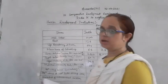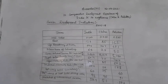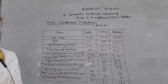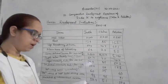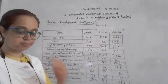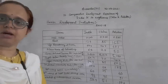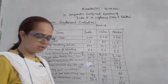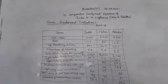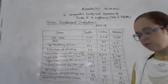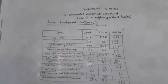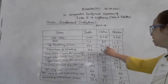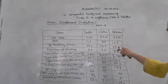Life expectancy refers to the average number of years for which people are expected to live. A country which provides better civic amenities and health facilities secures a higher level of life expectancy for its citizens. China has the highest life expectancy, India is around 77, and Pakistan is around 67.